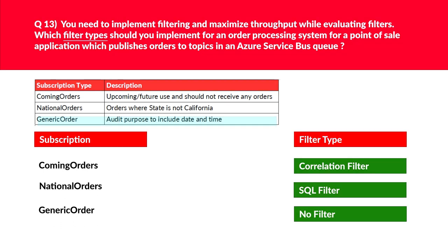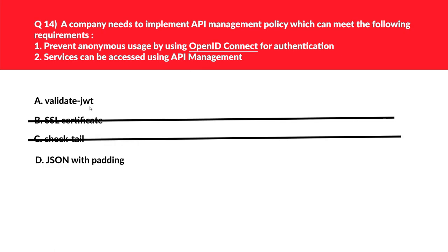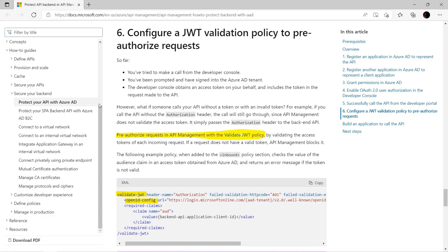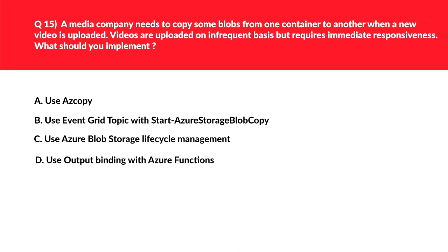We'll log these as the correct answers. Quick tip for the exam: whenever you see keywords like 'OpenID Connect,' think about the validate JWT policy. Since option A contains validate JWT, we'll keep it and reject the rest. Per official documentation, pre-authorized requests in API Management use the validate JWT policy with an OpenID config XML block. We log A as the correct answer.